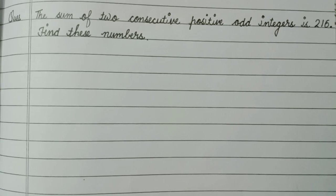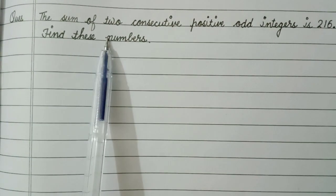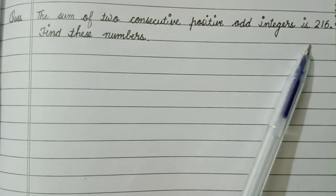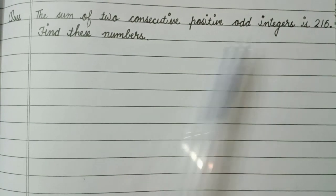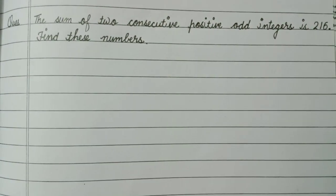Hi friends, welcome back to my channel. Today we are going to find the solution of this question. The question is: the sum of two consecutive positive odd integers is 216. Find these numbers. Let's start this solution.